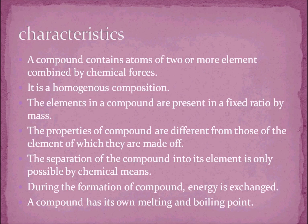The general characteristics of a compound are: it contains atoms of two or more elements combined by chemical forces; it has a homogeneous composition; the elements are present in a fixed ratio by mass; the properties of a compound are different from those of the elements it is made of; separation of a compound into its elements is only possible by chemical means; and during the formation of a compound, energy is either released or absorbed. A compound also has its own fixed melting and boiling point.